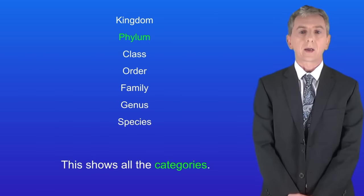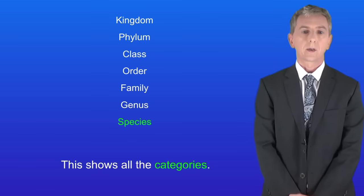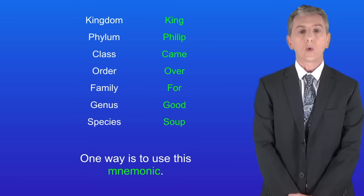So we have kingdom, phylum, class, order, family, genus and species. Now you need to learn this system and one way is to use this mnemonic: King Philip came over for good soup.